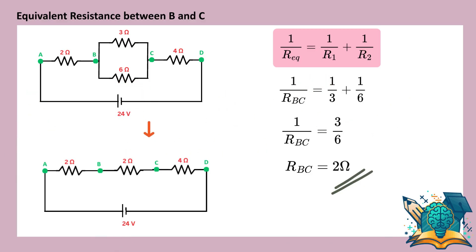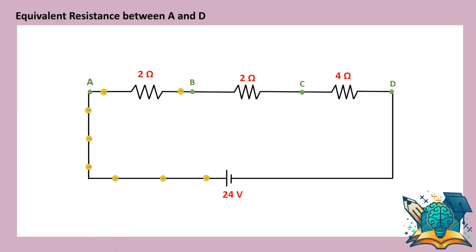We can now simplify the circuit like this. After simplifying the circuit, you can see that the same current flows through all three resistors. This means they are connected in series.